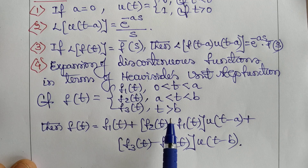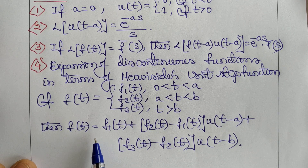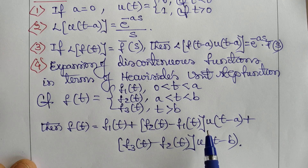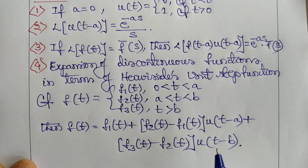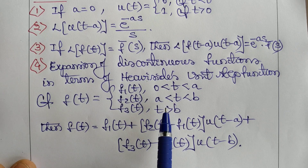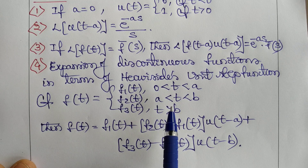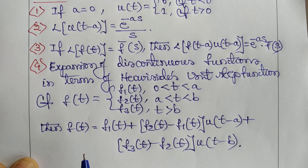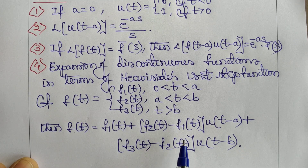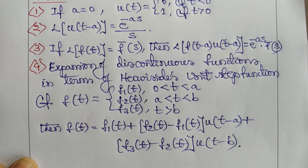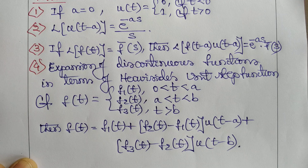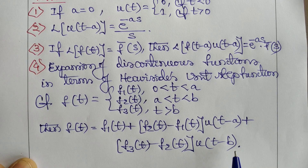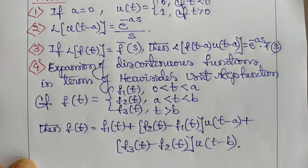If only two functions are given — f₁(t) for 0 < t < a and f₂(t) for t > a — then the unit step expansion is: f(t) = f₁(t) + [f₂(t) - f₁(t)]·u(t - a). If four functions are given, a fourth term will come, and so on.